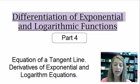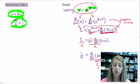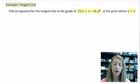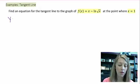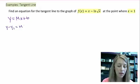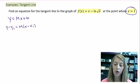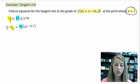Moving on with differentiation of exponential and logarithmic functions, we just learned the derivative of natural log of x is 1 over x. We did some examples with it, and now we want to find the equation of a tangent line. To find the equation of a line, we utilize either y equals mx plus b, or y minus y1 equals m times x minus x1. They give us the x value, but we need to come up with a y value and a slope value.